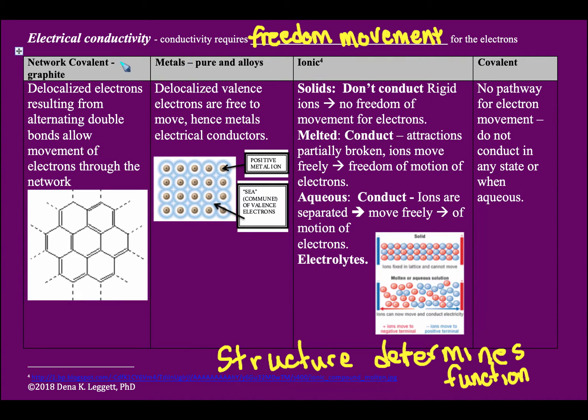Now if we're talking about network covalent, very few network covalents actually conduct. Some do, some don't. When they do, what it is depending upon is what is called an alternating double bond and that is called a conjugated double bonded system. And so if we have alternating double bonds, these electrons are delocalized and we have freedom of movement through the network. So some of these will conduct.